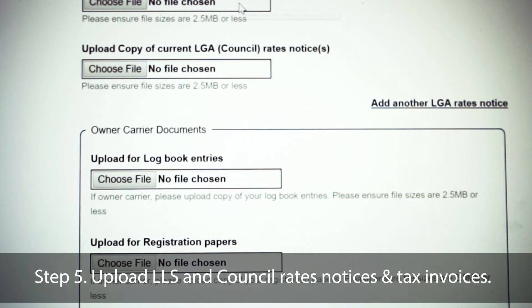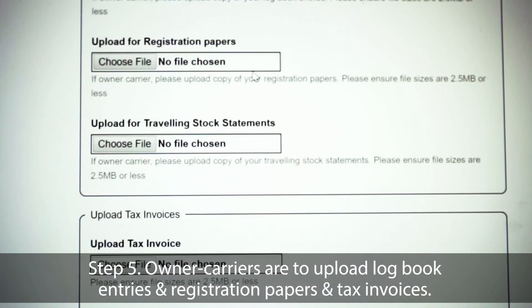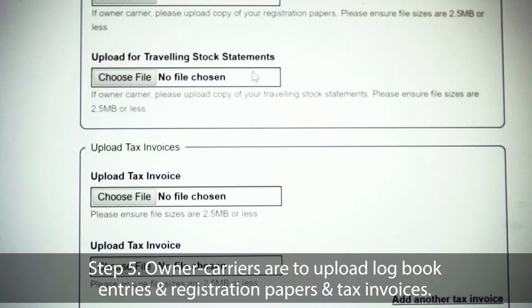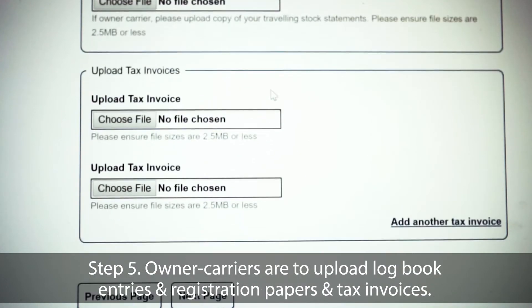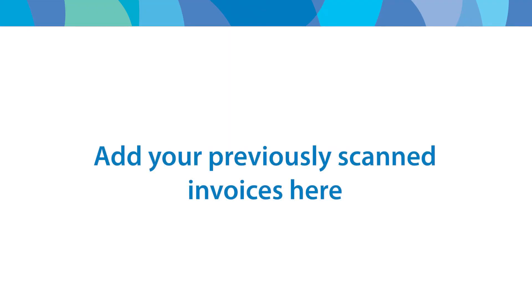On this page, you will need to upload all of your attachments: your LLS rates, your LGA rates, and if you're an owner carrier, your logbook entries and registration papers. You also have the option to add multiple invoices. This will be all of the invoices requiring payment, even if they aren't listed on the movement page.